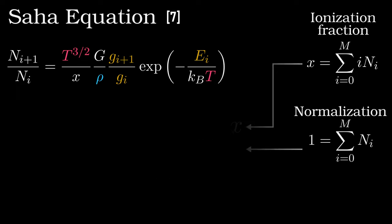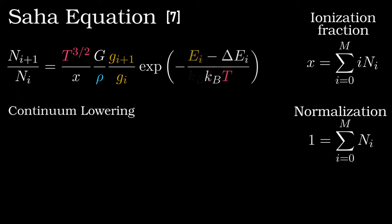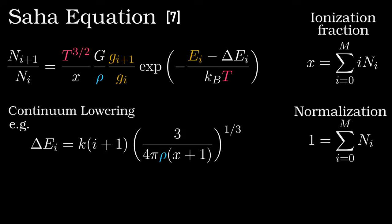There is a further complication called continuum lowering when the plasma becomes very dense, as with an inertial fusion experiment or certain astrophysical objects. In short, when the density of free electrons becomes sufficiently high, they interact with atoms, making them easier to ionize. Mathematically, this means that the right hand side of the Saha equation acquires a much more complicated function of x. The equation for the ionization fraction now becomes a truly transcendental equation even for a pure hydrogen plasma.